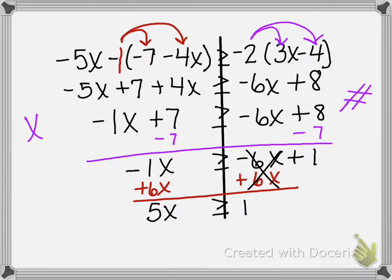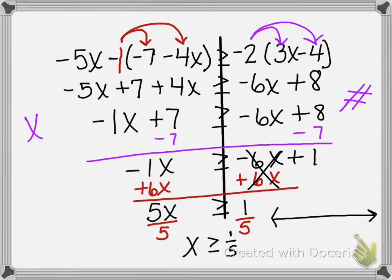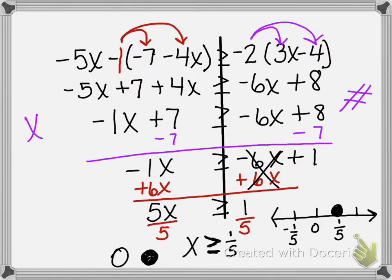It's okay to get a fraction — if you got the answer, hold up your board. x is greater than or equal to 1/5. Now I need to graph this, so I'm going to draw my number line and put 0 and 1/5. The 'equal to' means a closed circle, so I'm going to close it in at 1/5. It points to the right, so I'm going to shade to the right. What questions do you have on this one?